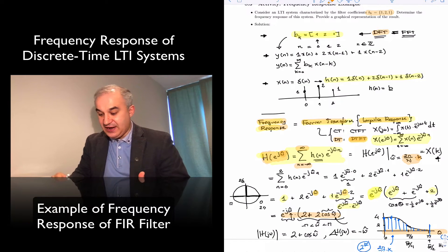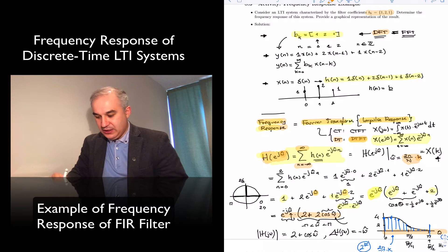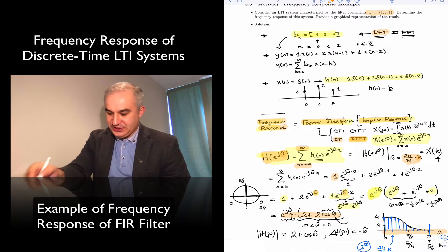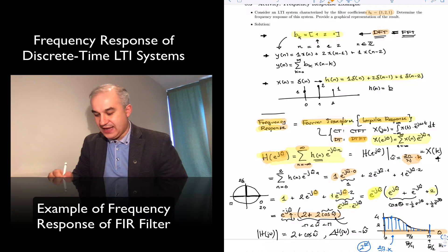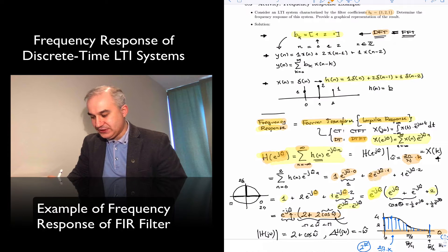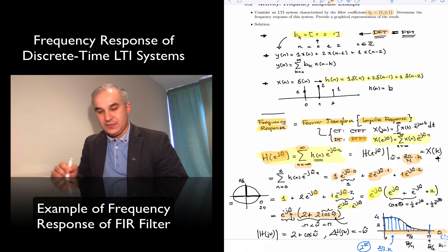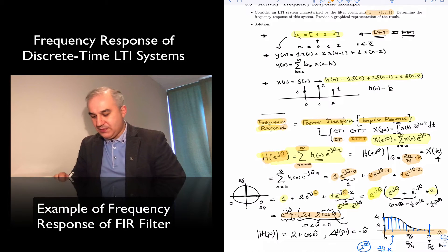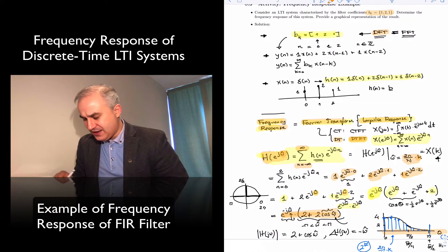Since it is finite, it's easy to calculate. So we put the first coefficient, e to the j omega hat times zero, the second coefficient, the third coefficient, and then we need some mathematical manipulation to better understand that we saw that this was a low pass filter.